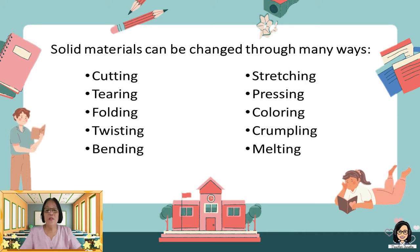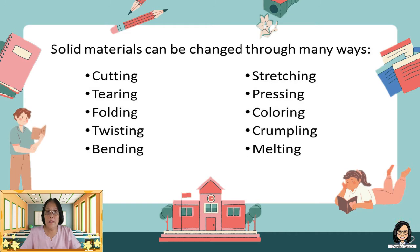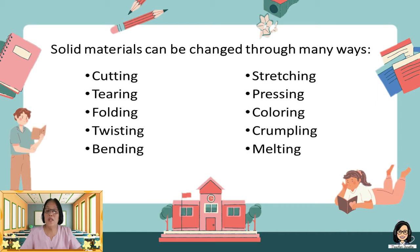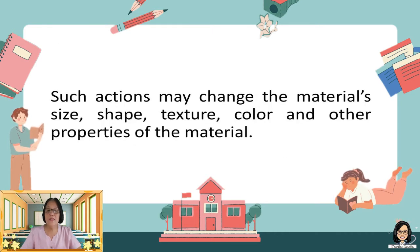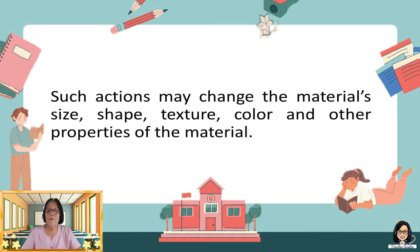Children, remember that solid materials can be changed through many ways: cutting, tearing, folding, twisting, bending, stretching, pressing, coloring, crumpling, and melting. Such actions may change the material's size, shape, texture, color, and other properties of materials.